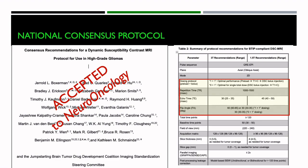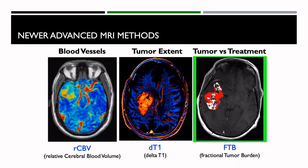In summary, these are well-understood, validated technologies: the relative cerebral blood volume method gives maps of blood vessels throughout the brain; the delta T1 method gives true enhancing lesions so we know exactly where the enhancing lesion is; and the fractional tumor burden maps distinguish what's tumor in red and what's treatment effect. We have great hope for these biomarkers to really shift the paradigm in the treatment management of patients.